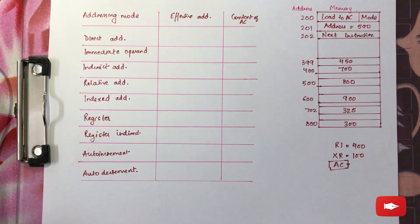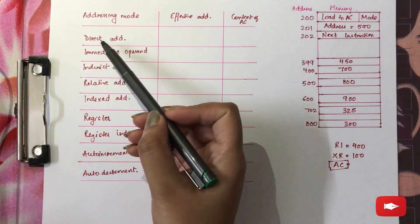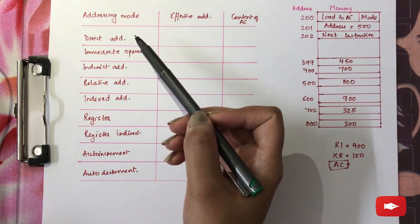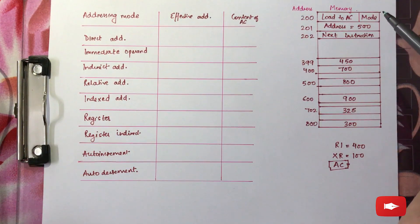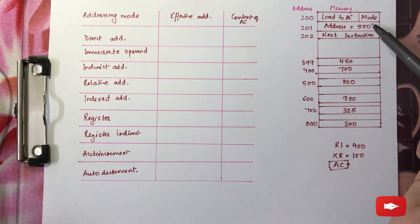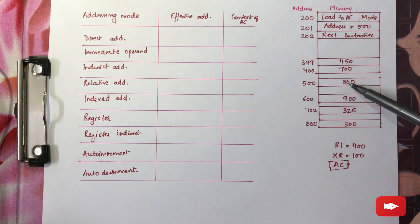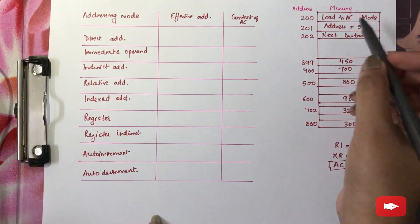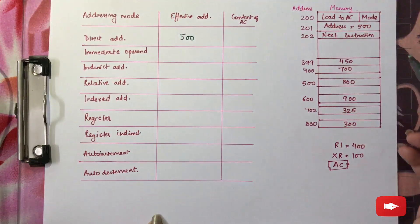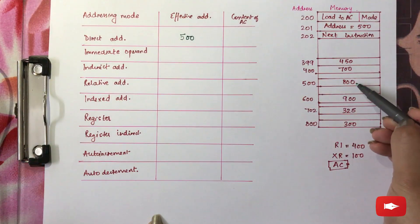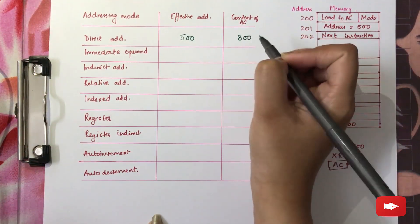The effective address is the address which contains the operand. First is direct addressing. As we have already studied, direct addressing mode says that the value in the address part is the effective address and the value contained at that particular address is the operand. The value in the address part is 500, which will be your effective address, and the value at that particular address, which is 800, will be your operand value.